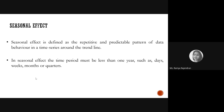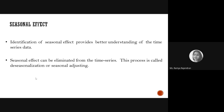The time period for seasonality can be anything — a year, a month, a day, or even hours. For example, ice cream sales may be high during noon but not in the mornings or nights. This identification of seasonal effect is very important when you compute forecasted values. The seasonal effect can be eliminated from the data — this is called de-seasonization or seasonal adjusting.